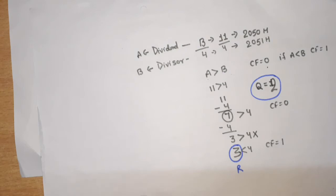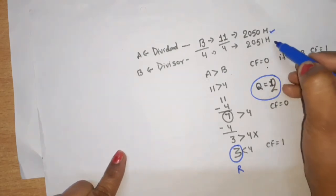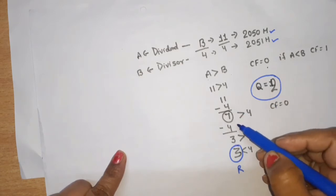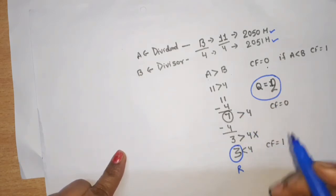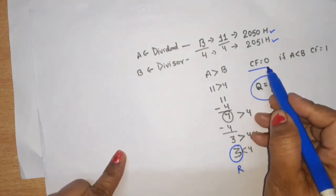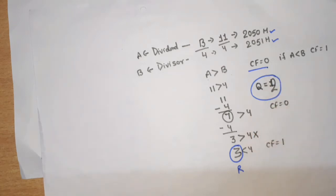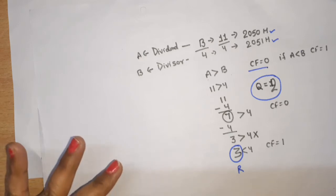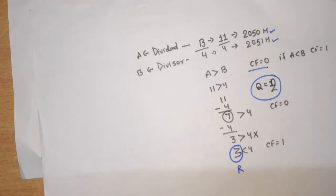So now we will write the program using this same concept. We take the first number and second number, perform subtraction when CF is equal to 0 — meaning carry is 0 so subtraction is possible. If CF is 1, subtraction is not possible, division is not possible, and the current dividend becomes the remainder.